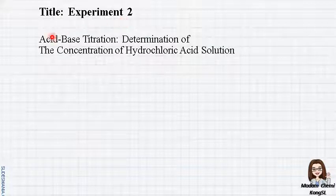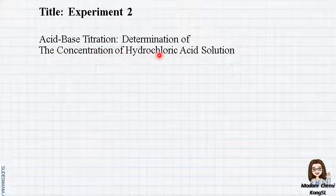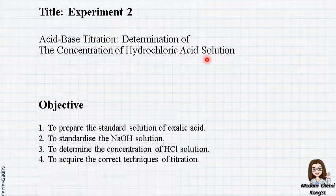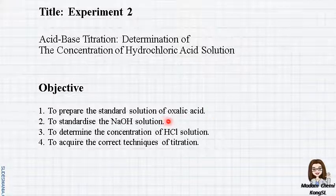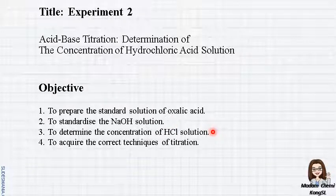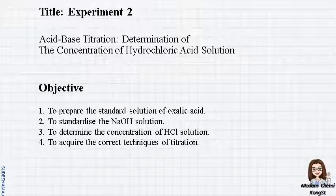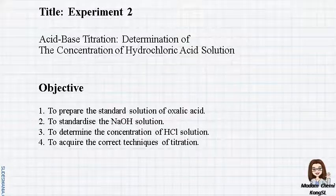Experiment 2. The title is Acid-Base Titration: Determination of the Concentration of Hydrochloric Acid Solution. There are a few objectives for this experiment. First, we must know how to prepare the standard solution of oxalic acid. Second, to standardize the sodium hydroxide solution. Third, determine the concentration of hydrochloric acid solution. And the most important part, you must acquire the correct technique of titration — how to handle the burette, how to handle the pipette, and how to complete the experiment with repeating titration.